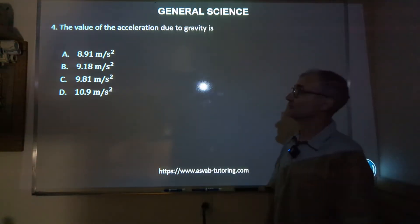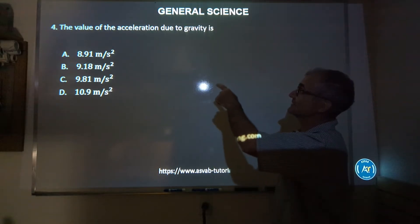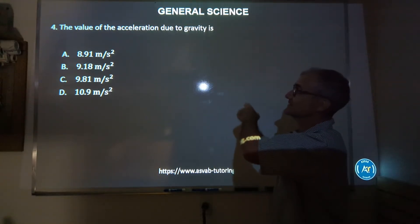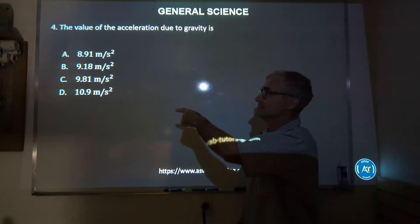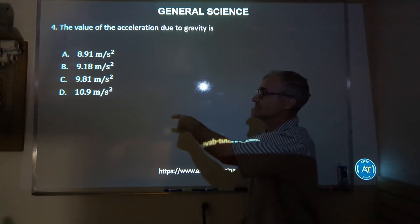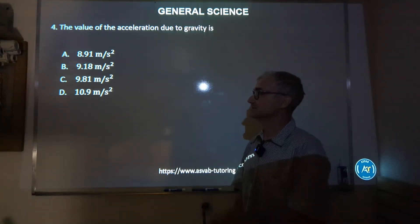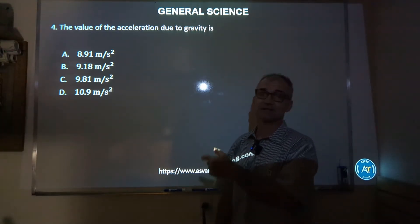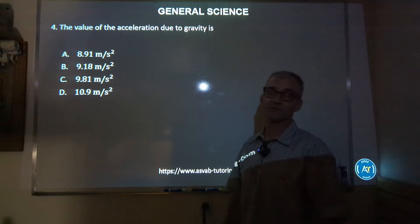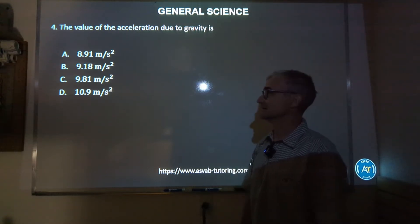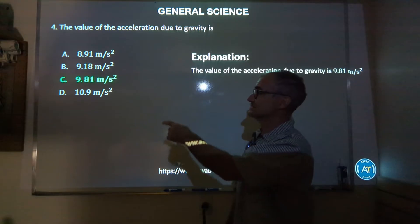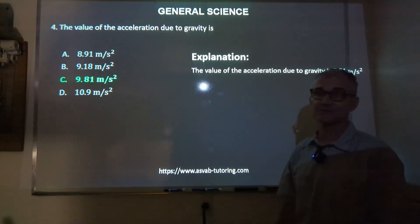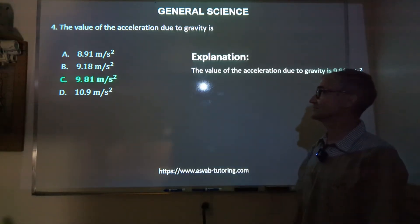Number four: the value of the acceleration due to gravity is 8.91, 9.18, 9.81, or 10.9 meters per second squared? This is just a number you need to know from a physics class. Correct answer is C, 9.81 meters per second squared.